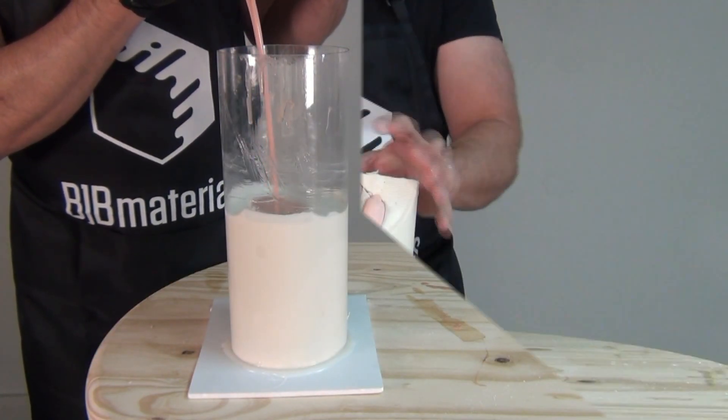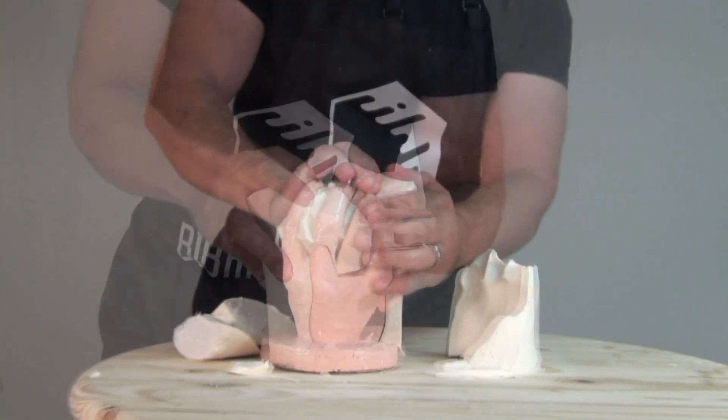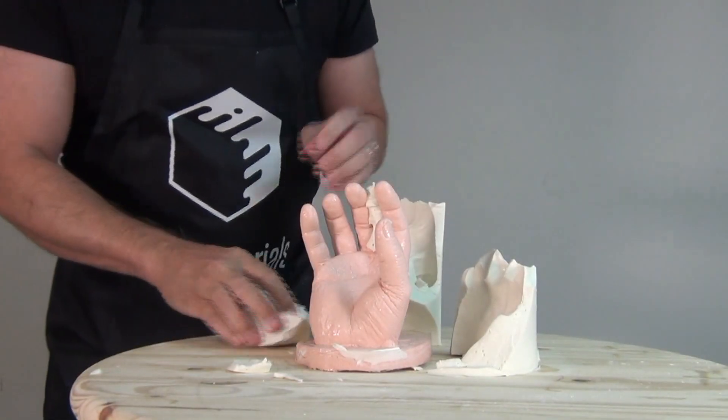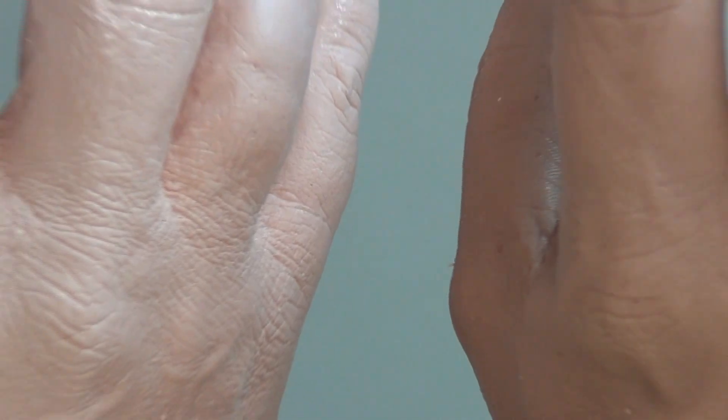This process is tricky because alginate is a water-based impression material and polyurethane resin does not like moisture. So in this tutorial, I'm going to be covering the use of TC-808 for this application.